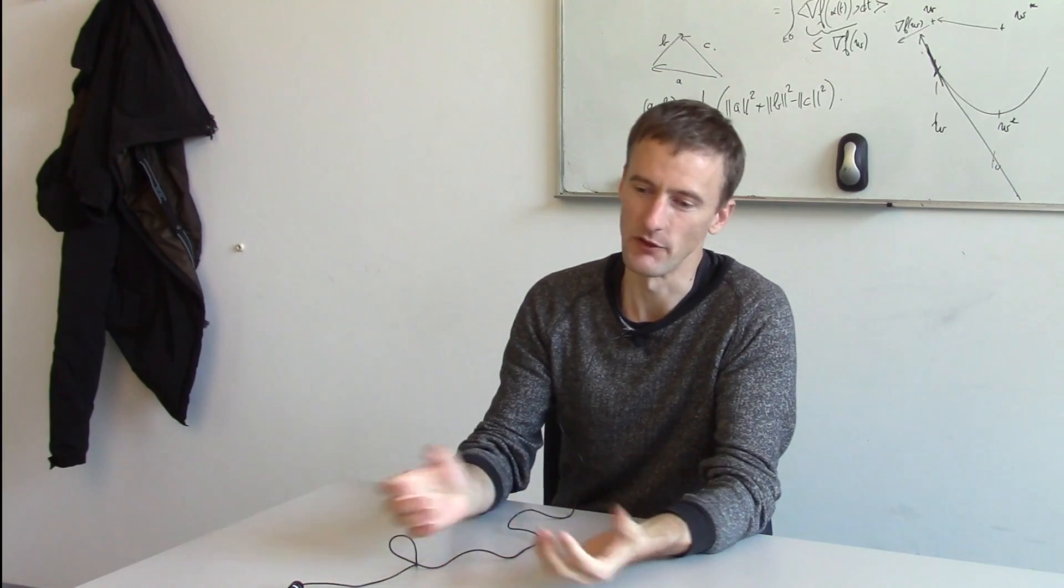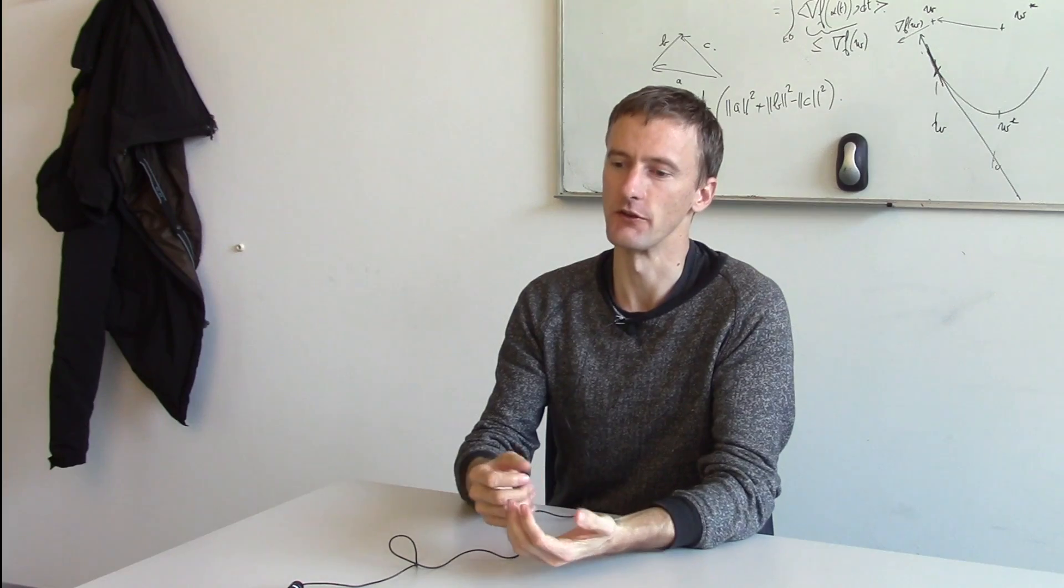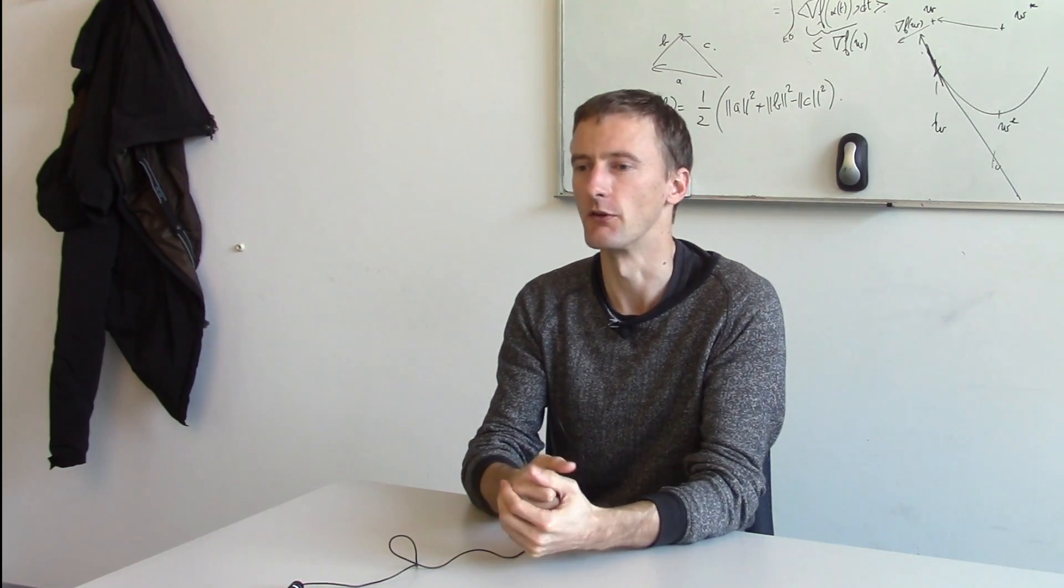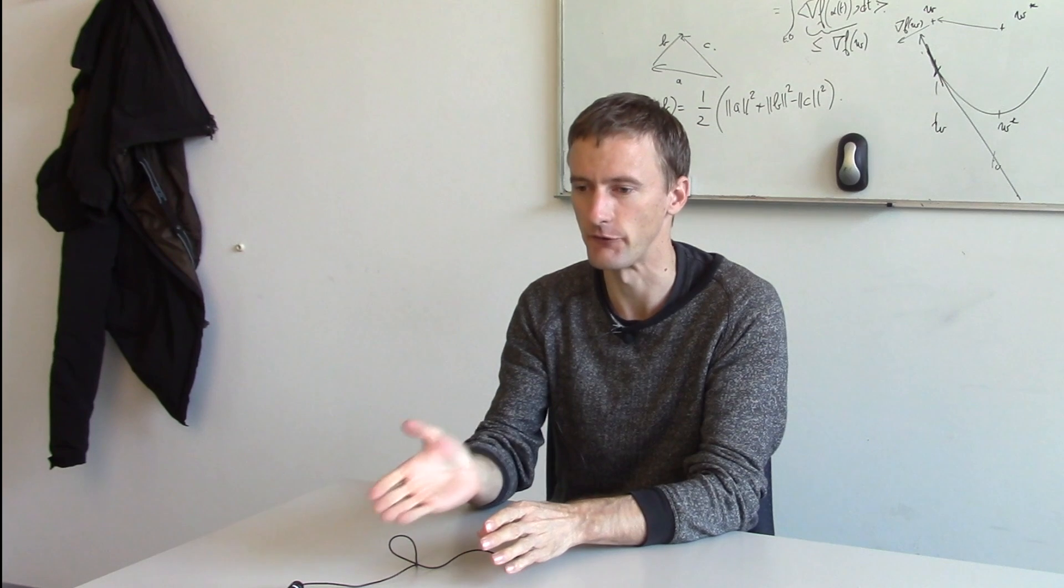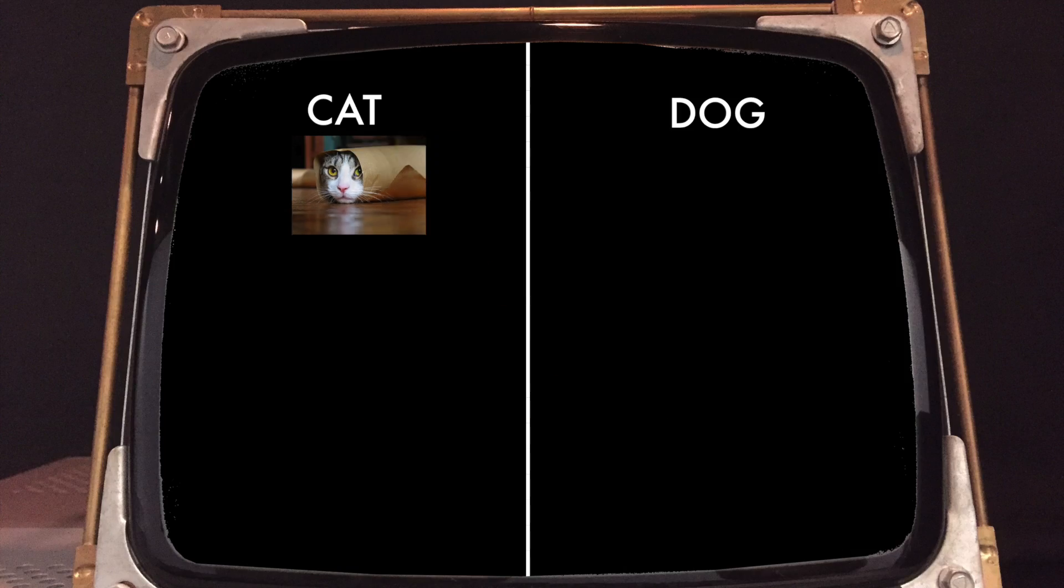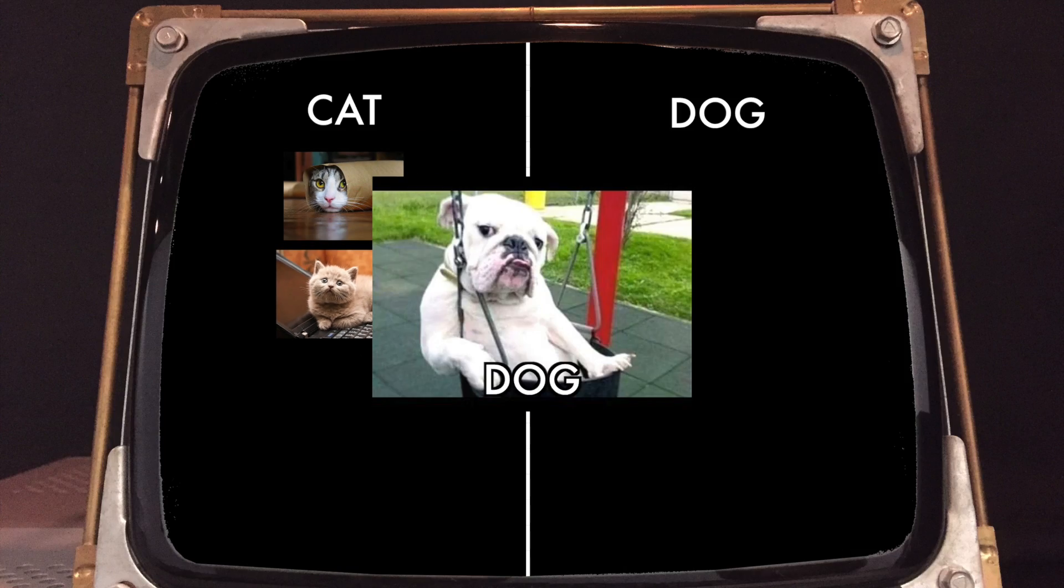Here's an example: for example, you have a lot of images and you try to learn, is this an image of a cat or of a dog? So you try to distinguish these two kinds of images. We have a hundred thousand images for which we really know this is a dog, this is a cat.